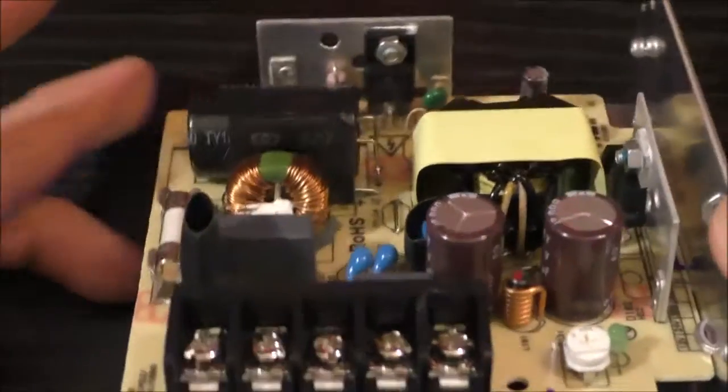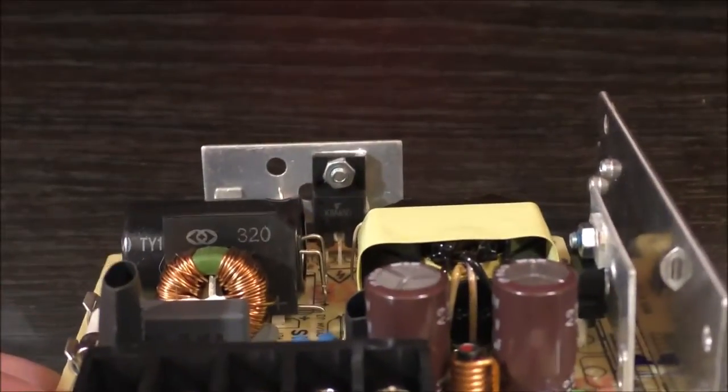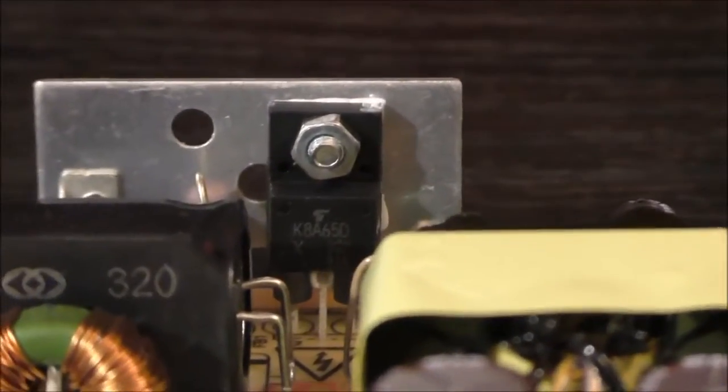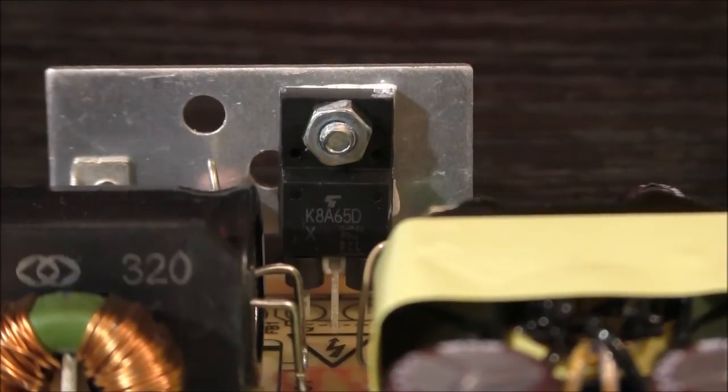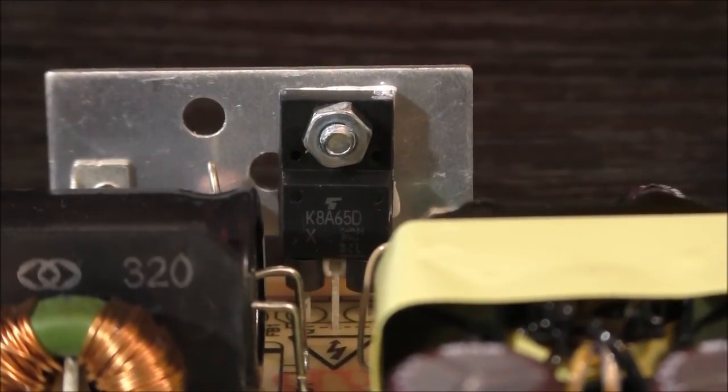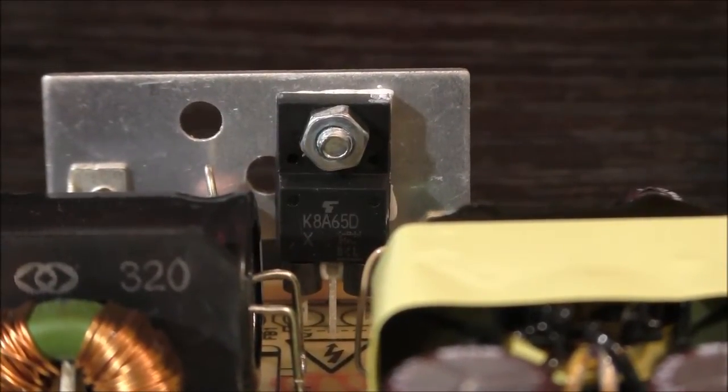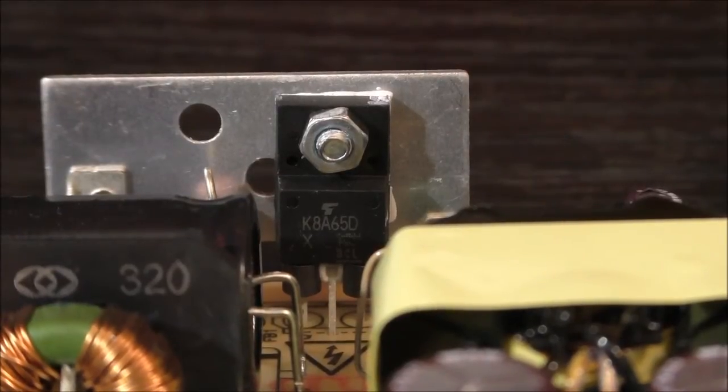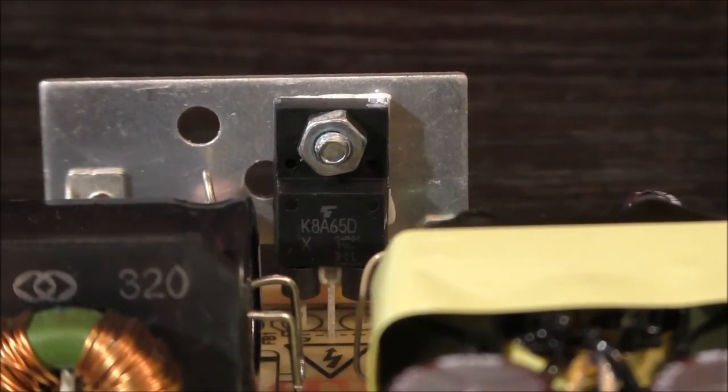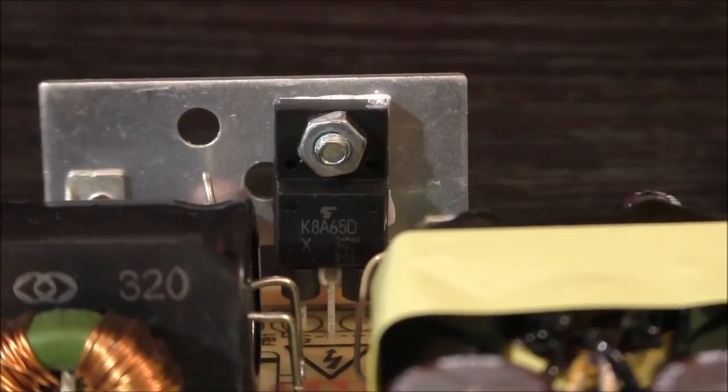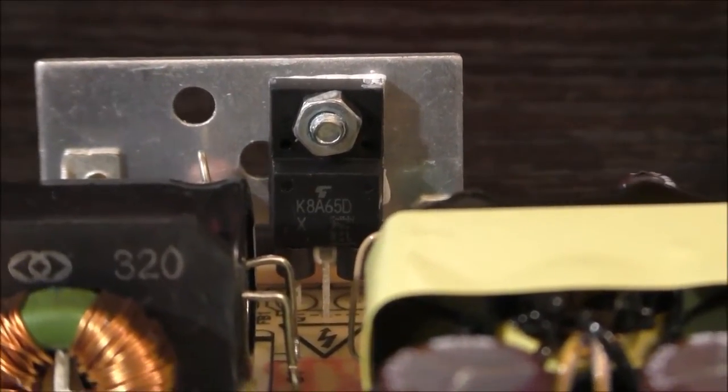So I went to look at the part numbers and if you can see this, this is actually a K8A65D and it's an N-channel Toshiba transistor. It's an N-channel MOSFET and it's rated 650 volts, 8 amps, 0.7 ohms. So that's a nice transistor.